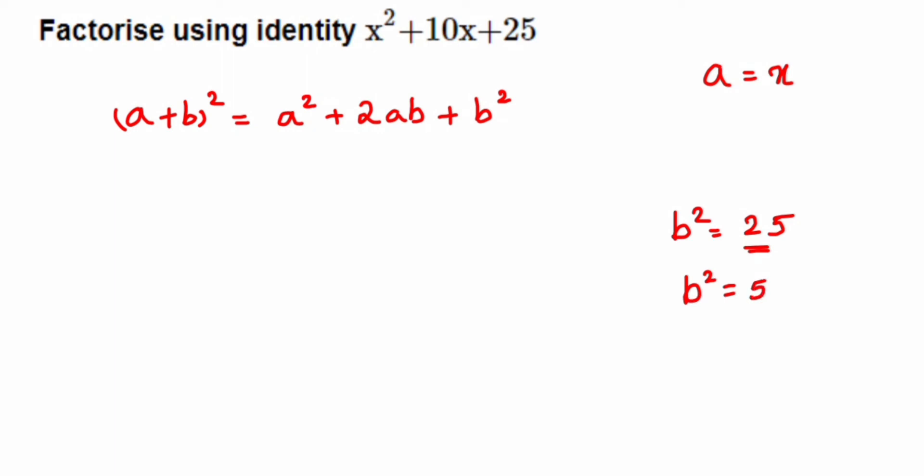In place of b², we have 25. We know that 25 is 5², so b equals 5. Here we were able to get the a and b values, and that is a very important step. Once you have done that, everything is completed.